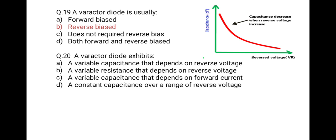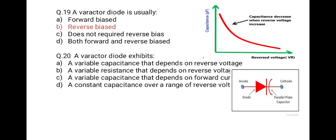The next question: a varactor diode exhibits — first a variable capacitance that depends on reverse voltage, second a variable resistance that depends on reverse voltage, third a variable capacitance that depends on forward current, last a constant capacitance over a range of reverse voltages. From the graph of capacitance versus reverse voltage, when we increase reverse voltage, capacitance decreases. So a varactor diode is a variable capacitor and its capacitance depends on reverse voltage. The correct option is A. This is the symbol of the varactor diode. Please like and subscribe.